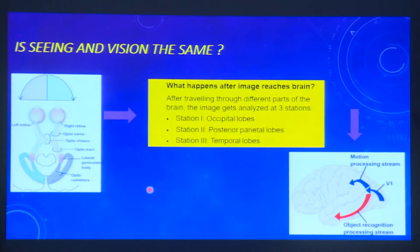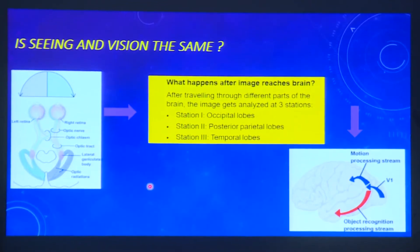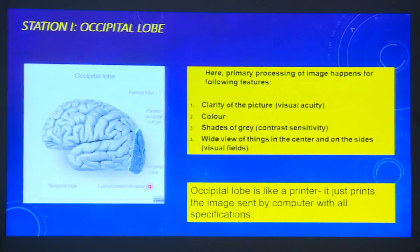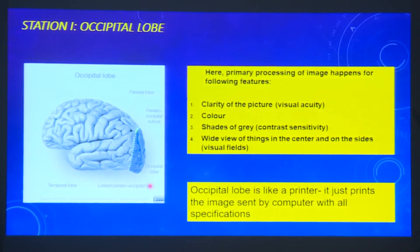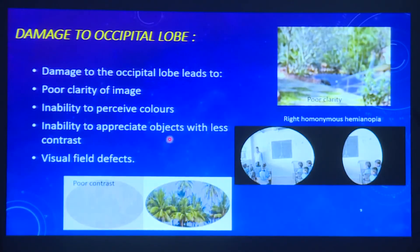We have to understand: are seeing and vision the same? They are not. What happens after the image reaches the brain? We have three stations: the occipital lobe, the posterior parietal lobe, and the temporal lobe. The occipital lobe is like a printer — it gives you clarity of the picture like visual acuity, colour, contrast sensitivity, and visual fields. If it is damaged, we will have poor clarity, poor contrast, and field defects — for example, a right homonymous hemianopia.